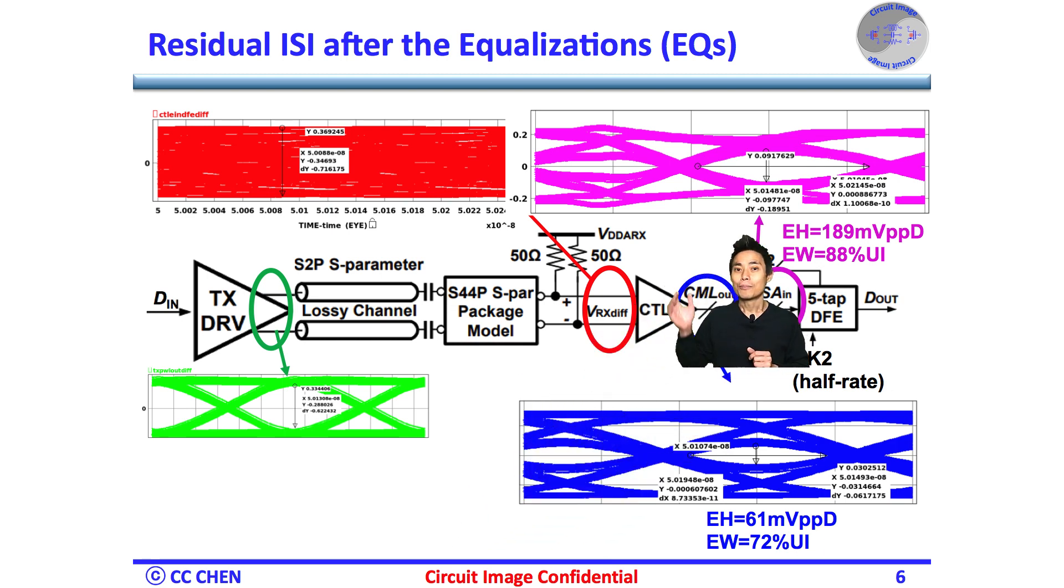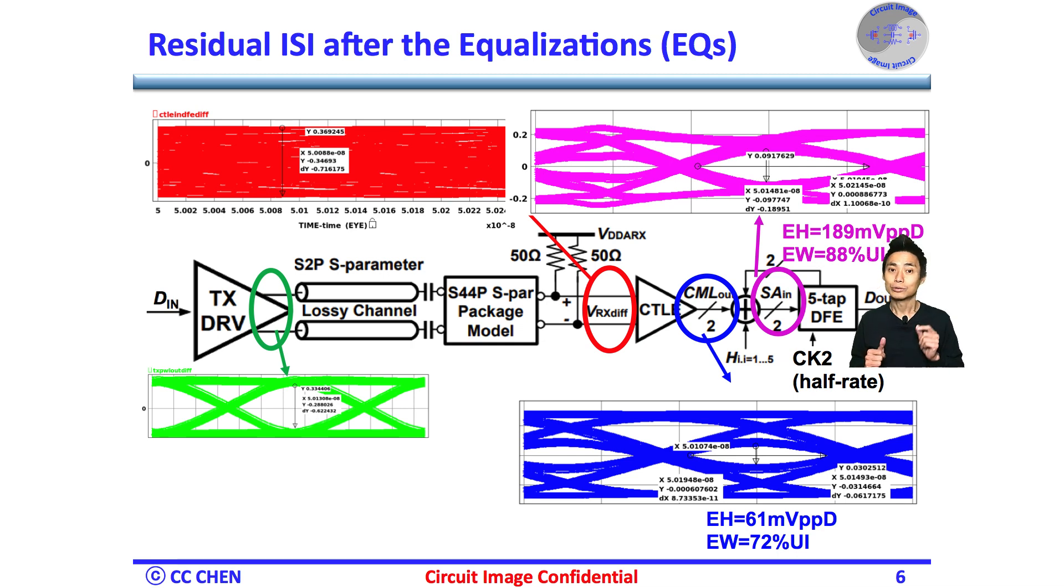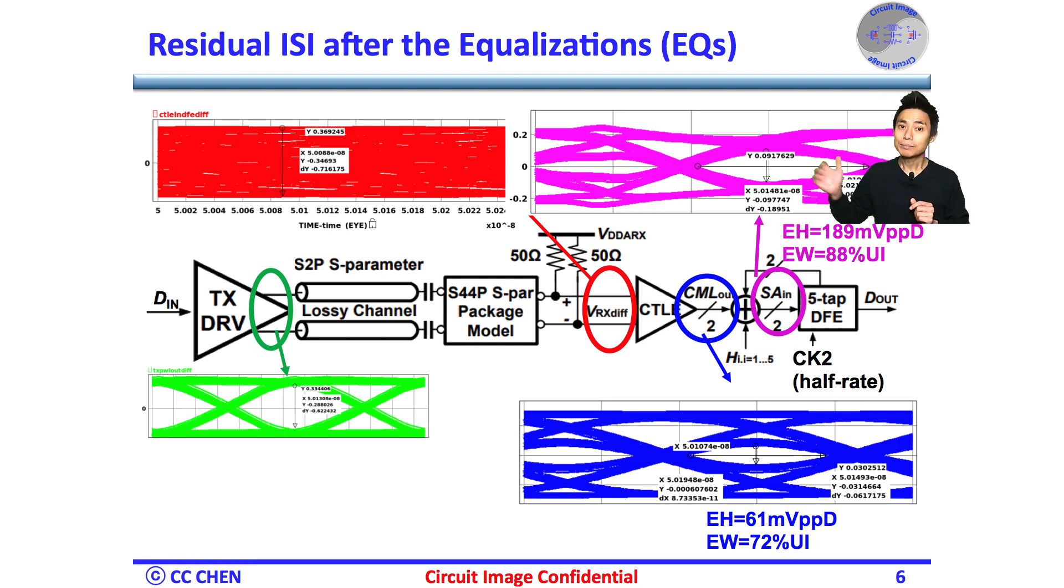For the case study, both CTLE and DFE will apply to equalize the 22 dB loss on the Nyquist rate. Therefore, the CTLE can open the eye at about 60 mVppd differential eye height, and the DFE will help to open the eye height further to 190 mVppd at the sampler front end.